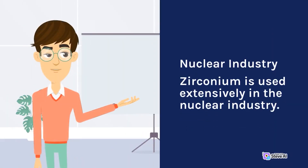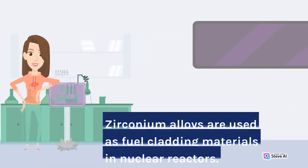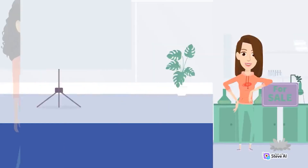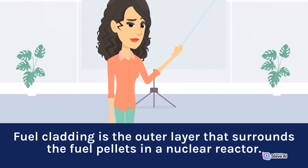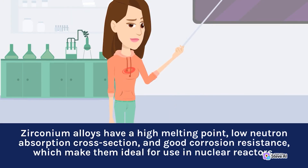Nuclear Industry. Zirconium is used extensively in the nuclear industry. Zirconium alloys are used as fuel cladding materials in nuclear reactors. Fuel cladding is the outer layer that surrounds the fuel pellets in a nuclear reactor. Zirconium alloys have a high melting point, low neutron absorption cross-section, and good corrosion resistance, which make them ideal for use in nuclear reactors.